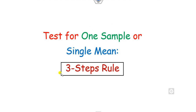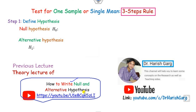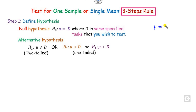For the one-sample t-test, we follow three simple steps. Step one: define the null hypothesis H0 and the alternative hypothesis H1. If you want to compare your population mean to some specific value D, H1 can be not equal to, greater than, or less than. If it is not equal to, we call it a two-tail test; if it is greater than or less than, we call it a one-tail test.